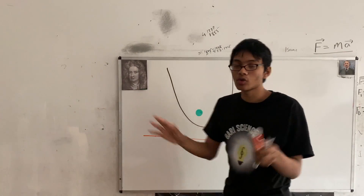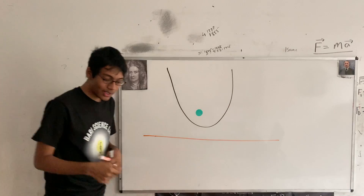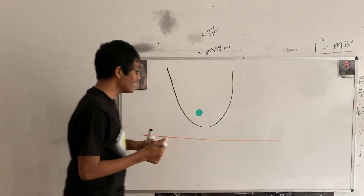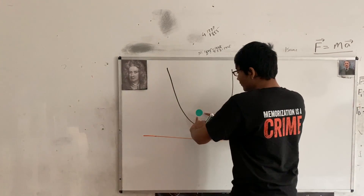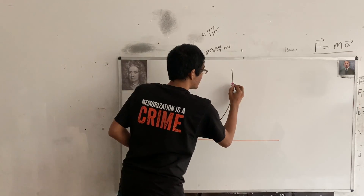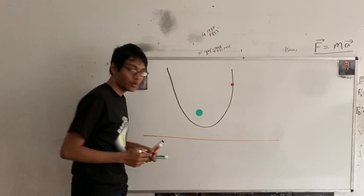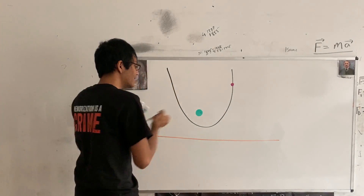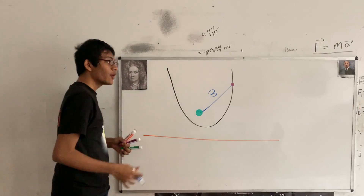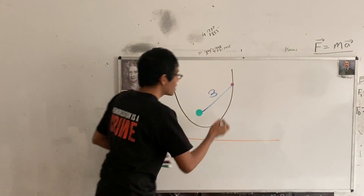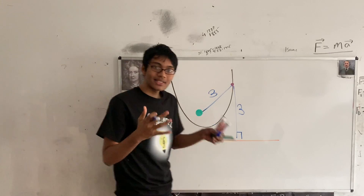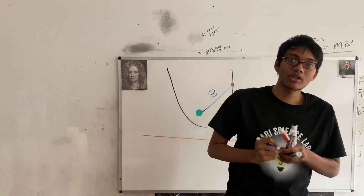Why is this point and this line so special? The reason is that if you take any point on the parabola, that point is going to be equidistant from both the focus — this green dot — and the orange directrix line. For example, if a point is three units away from the green point, it's also three units away from the orange line.